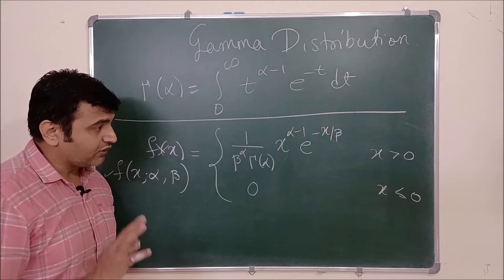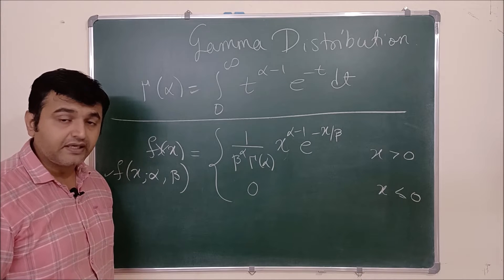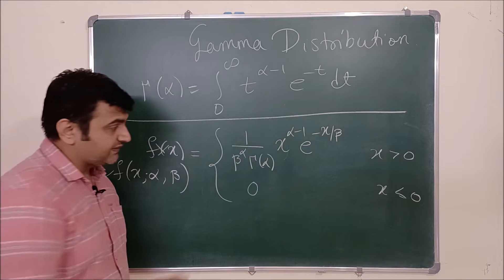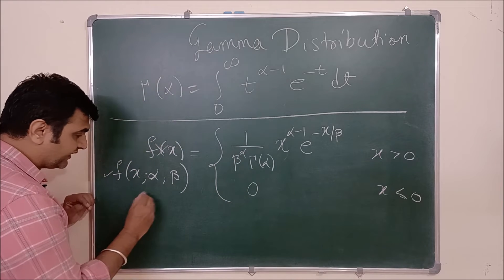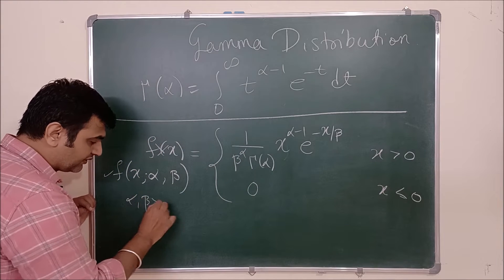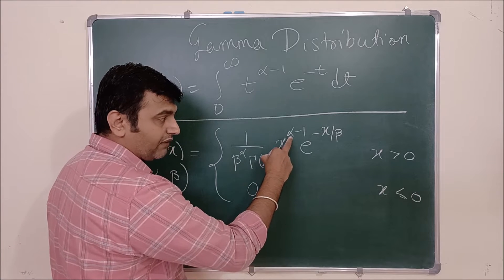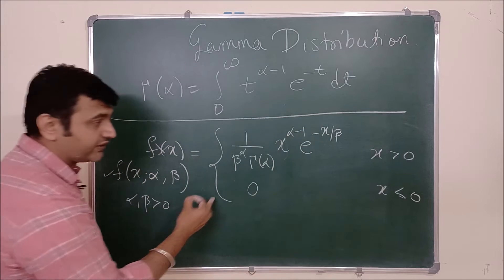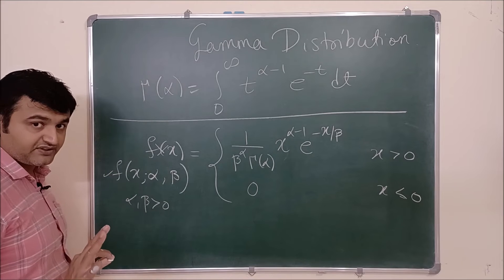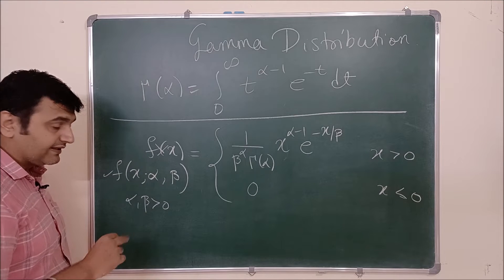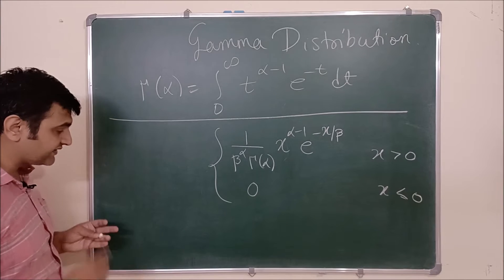For a function to be a PDF, two conditions must be satisfied. First, it should be non-negative. This function is non-negative because α and β are both greater than zero, any power function is positive, and the exponential function is always positive — so f(x) is non-negative. Second, the integral over all x must equal 1.